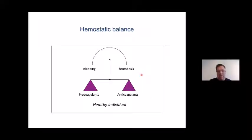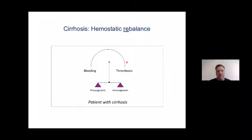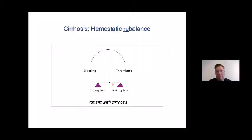This is the hemostatic balance in a healthy individual — a healthy balance between pro- and anticoagulants, avoiding bleeding and thrombosis. The concept of rebalanced hemostasis in patients with cirrhosis is becoming more and more accepted. There are deficiencies both on the pro- and anticoagulant side in patients with liver disease, leading to a net neutral balance. Although this balance is less stable, patients can experience both bleeding and thrombosis.